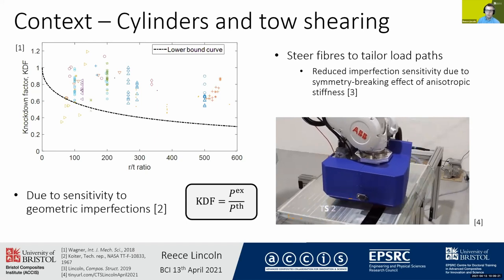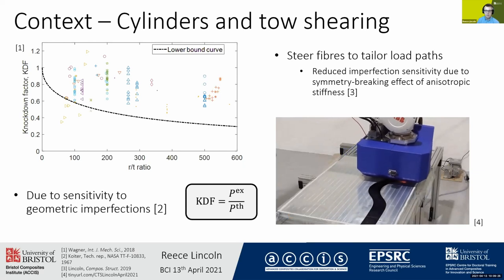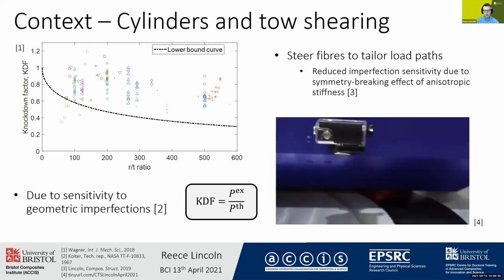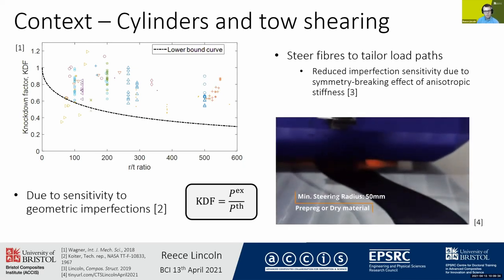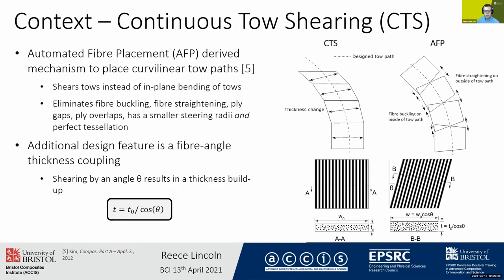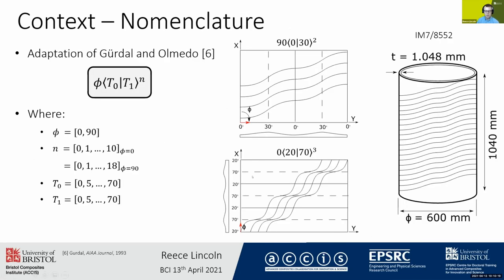Previous research has found that we are able to reduce the imperfection sensitivity of these cylinders using CTS, and that's due to the symmetry-breaking effect of the non-uniform stiffness field that is produced by CTS. CTS enables us to have in-plane shearing of tows — this is counter to what AFP does, which is in-plane bending. There are a number of benefits, primarily around material quality, but also an additional design feature: fiber angle–thickness coupling. If we shear a tow periodically, we can achieve a consistent thickness buildup, enabling us to embed stringers or rings into the cylinder wall.